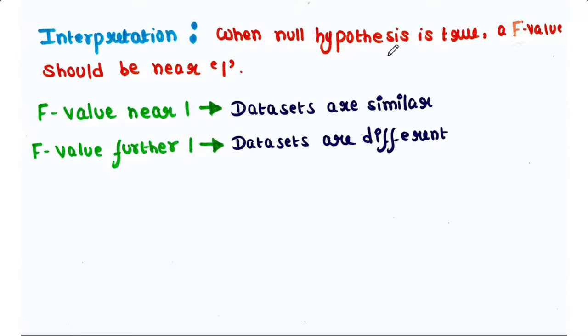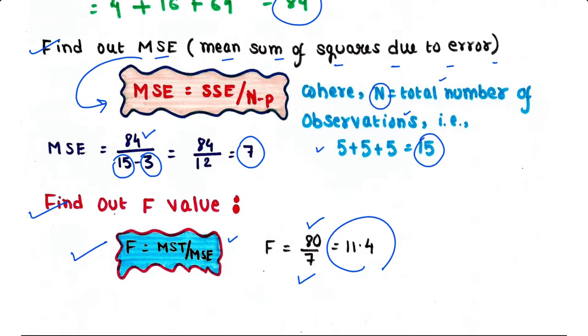So what we can interpret now? When the null hypothesis is true, an F value should be near 1 and less liable to extend further from 1. F values near 1 indicate more similarity within group means, that is the groups are similar. F values further from 1 indicate a large difference within group means, that is the groups are different. And what we found: we have found the F value is 11.4, that is far from 1. That means the groups are different.